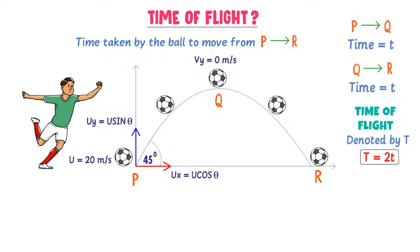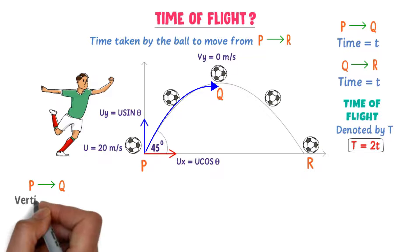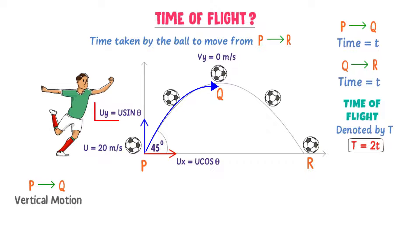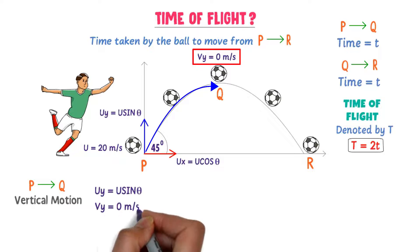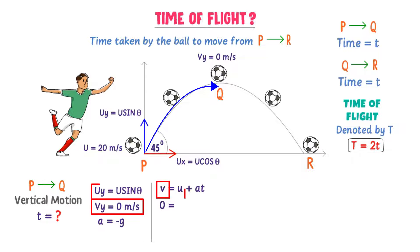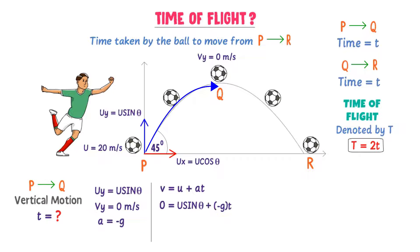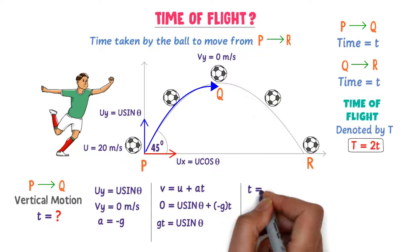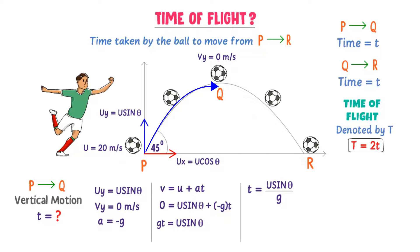Now I want to find the time taken by the ball to reach maximum height from P to Q. I consider only the vertical motion of the ball. The initial velocity in the y-direction is uy = u sin θ. The final velocity at Q (maximum height) is vy = 0 m/s. The acceleration a = −g. Using the equation v = u + at, we get: 0 = u sin θ + (−g)t. Rearranging: gt = u sin θ, so t = u sin θ / g. The ball takes t = u sin θ / g to go from point P to point Q.